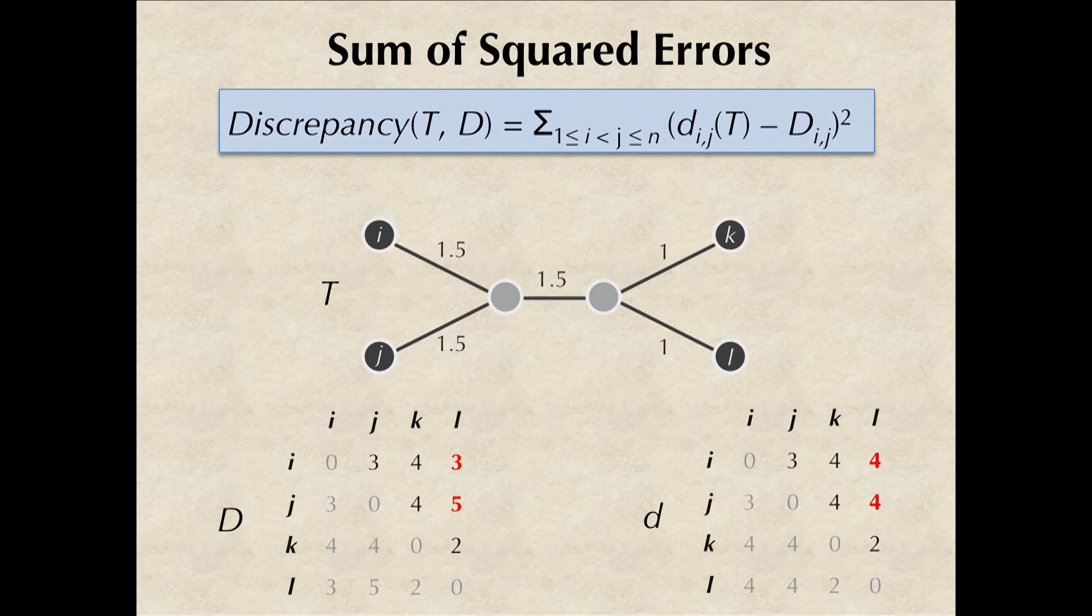So, in general, we can compute how well a tree fits a distance matrix by computing the sum of squared errors between the distance matrix, uppercase D, and the distances between leaves in the tree that we're given, lowercase d.